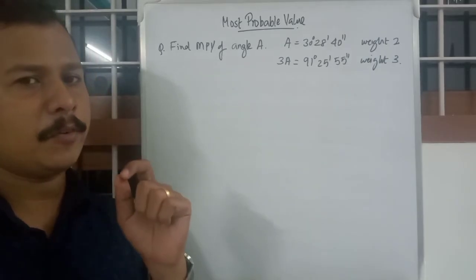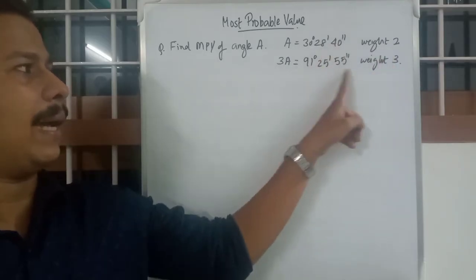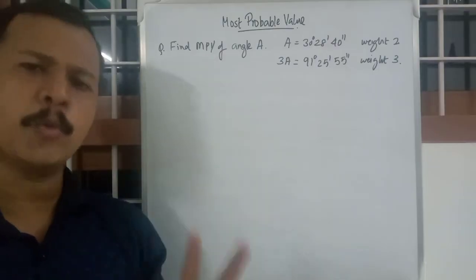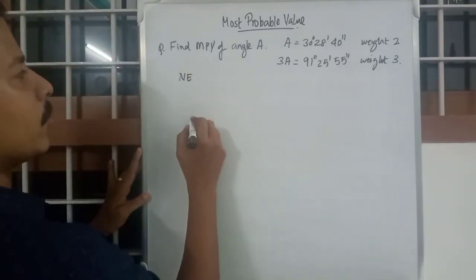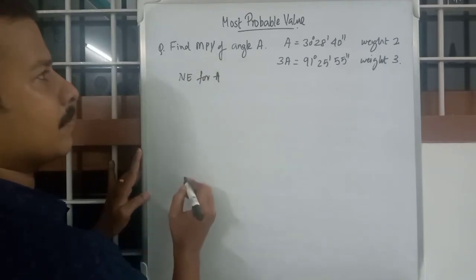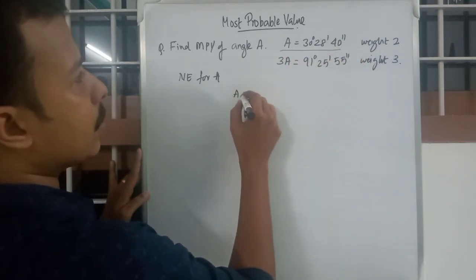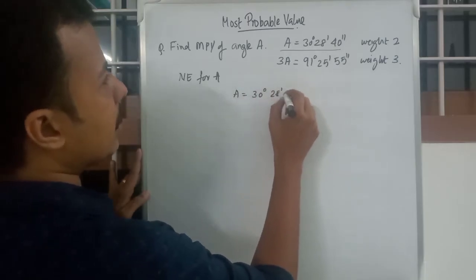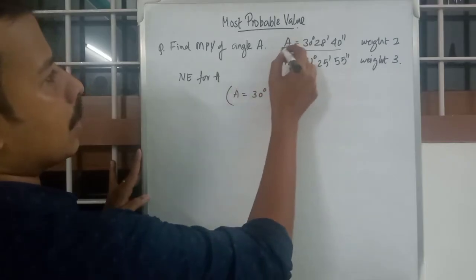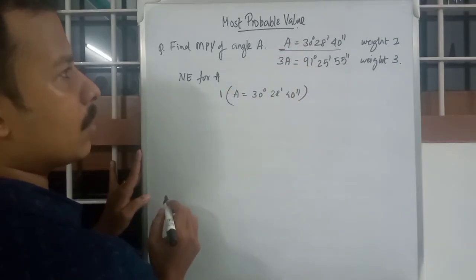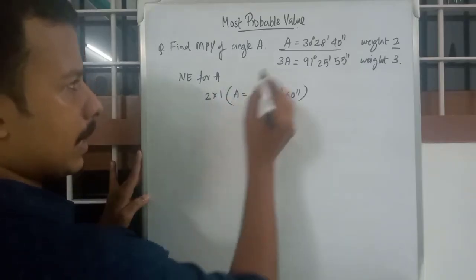Here is the first question: find the MPV of angle A. You have two equations with unequal weights — weight 2 and weight 3 — and one unknown A. Obviously the first step is to find the normal equation for A.